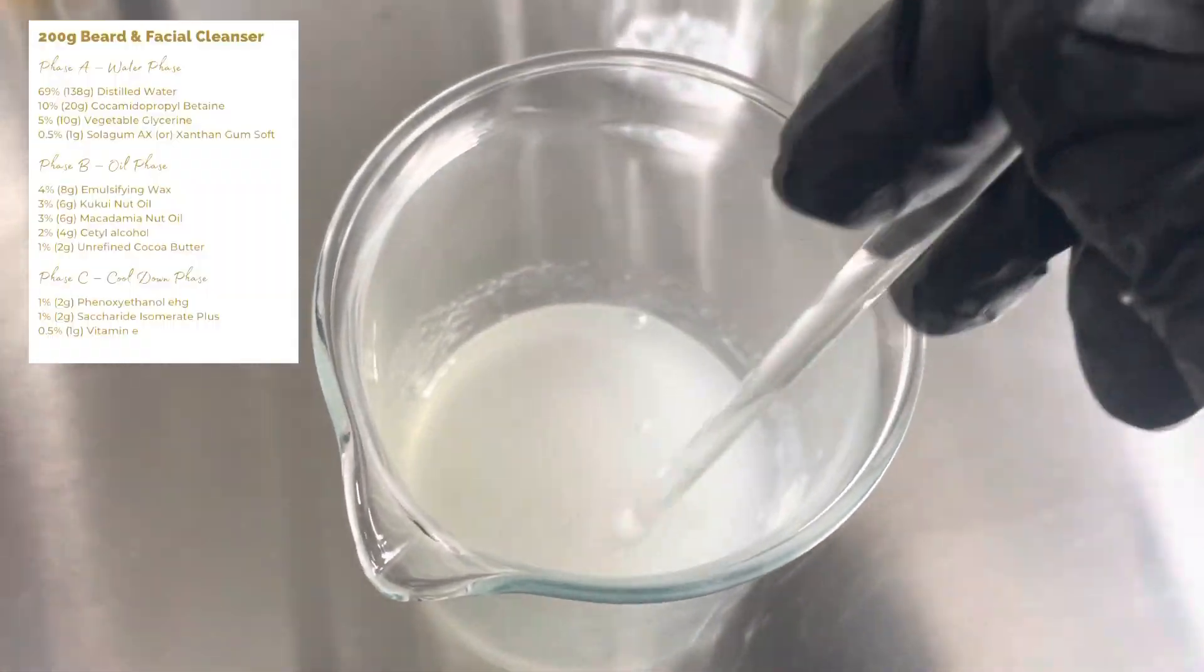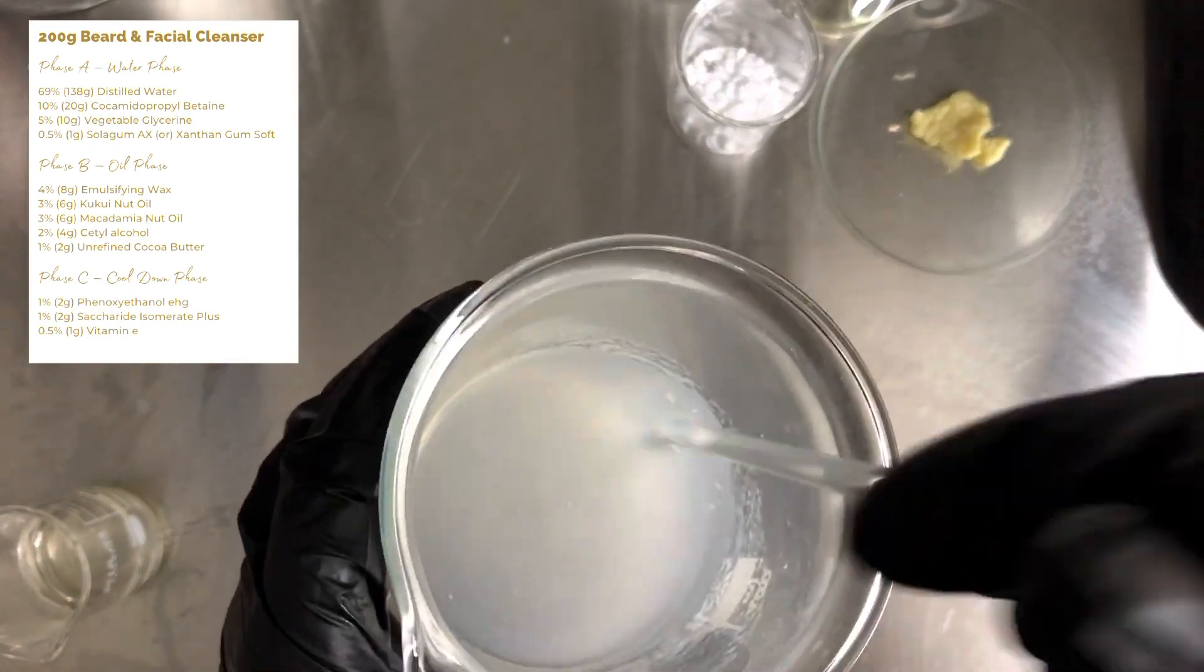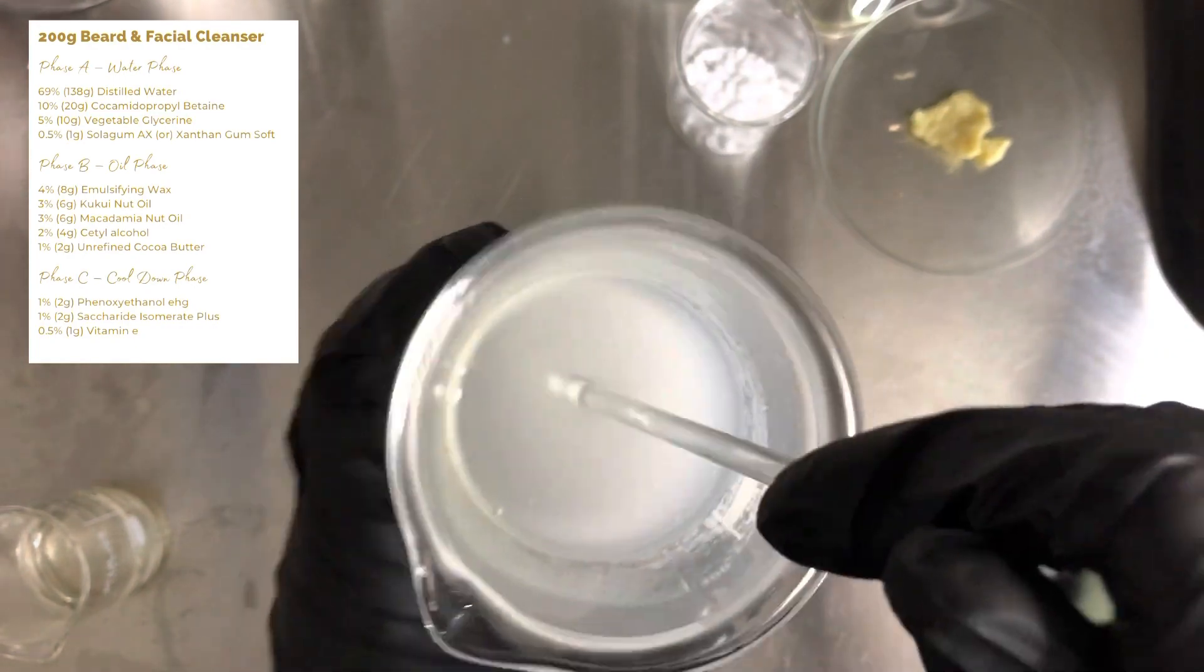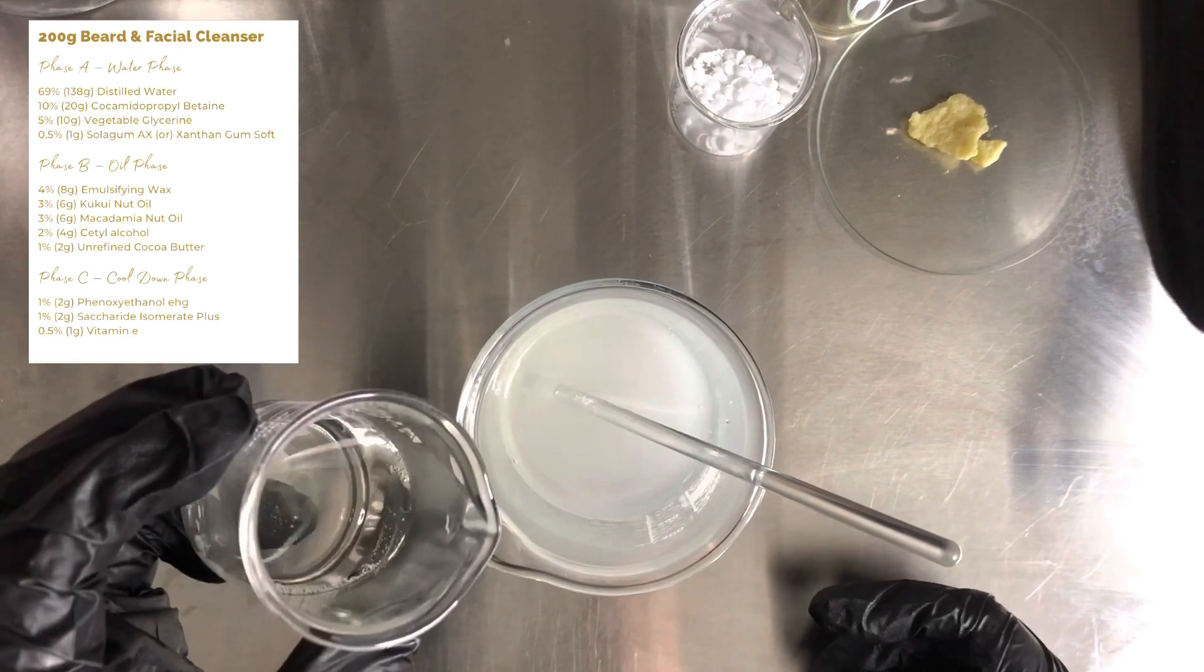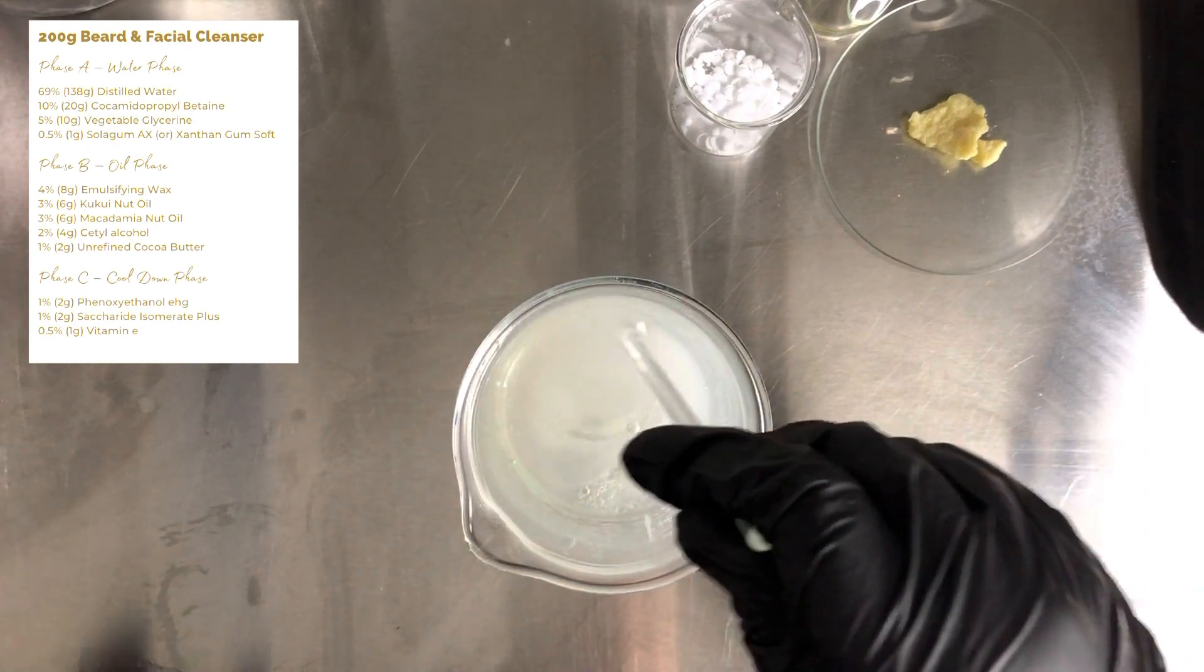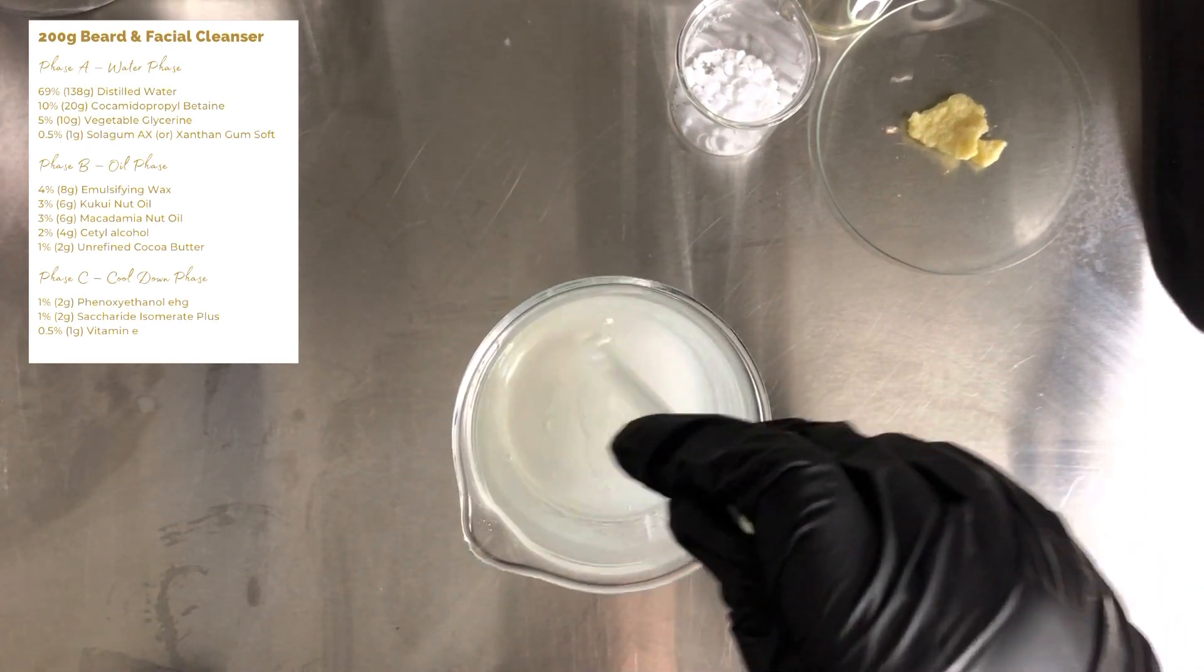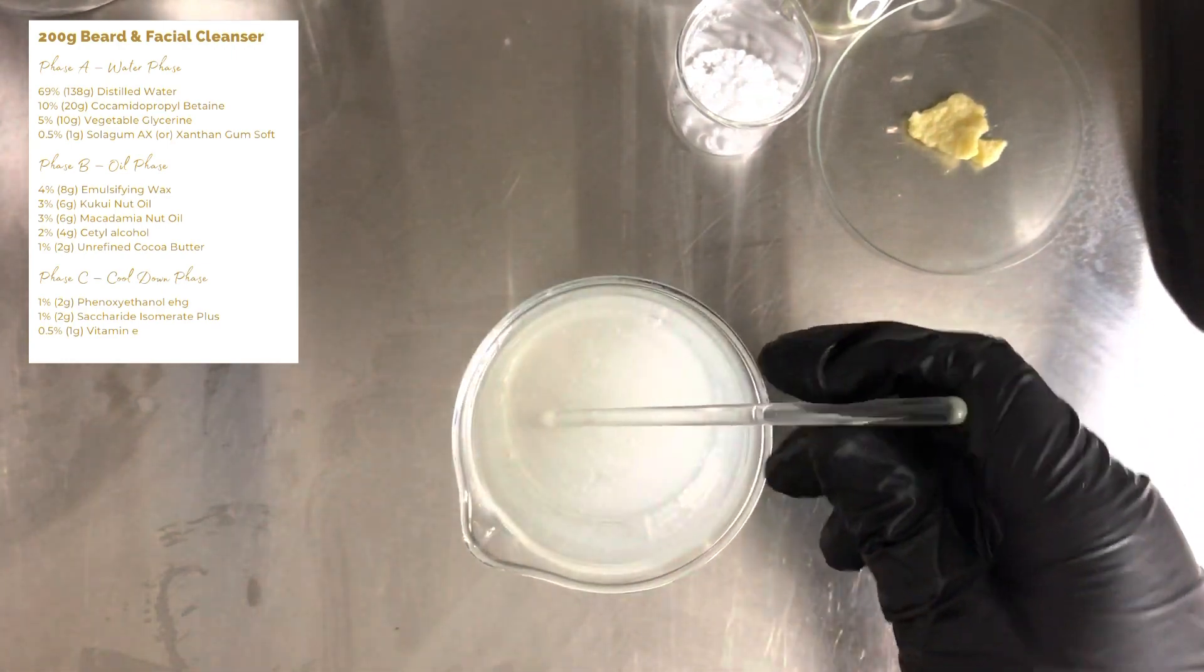I'll leave the formula up in the corner for you to refer to while I'm making this. Obviously, as usual, I forgot to press record, so what you see me mixing here is the distilled water, the vegetable glycerin, and the solar gum AX. If you don't have solar gum you can use xanthan gum. Then I just added the cocamidopropyl betaine, and this will be mixed in very gently to avoid creating too many bubbles.